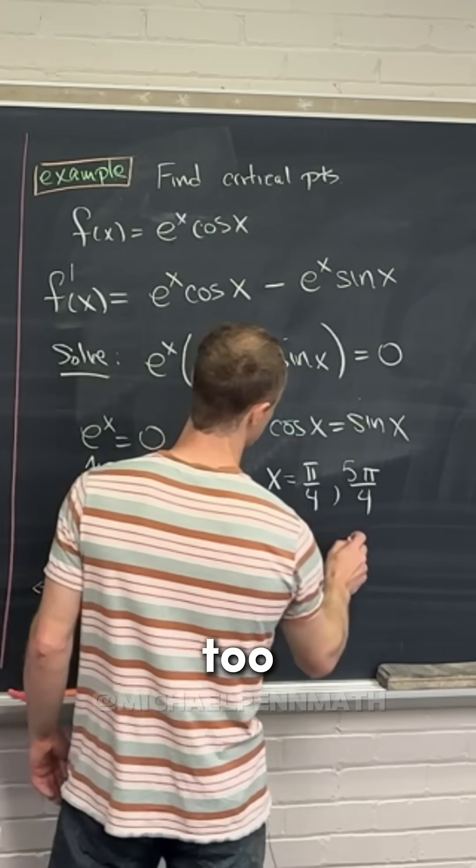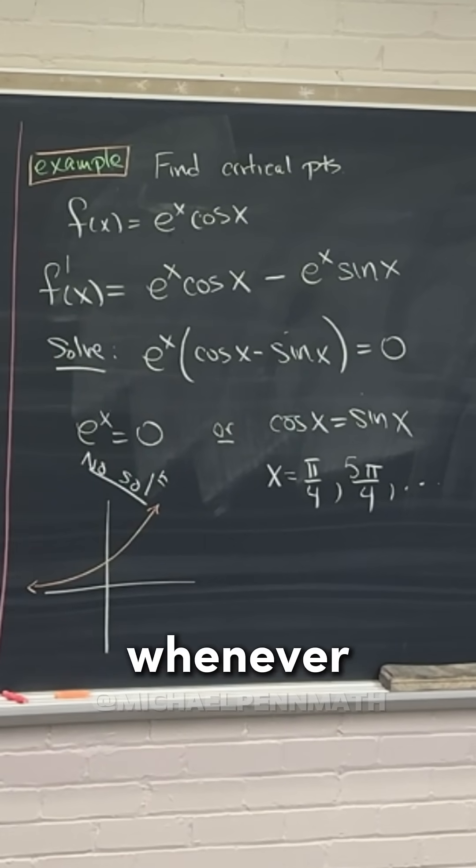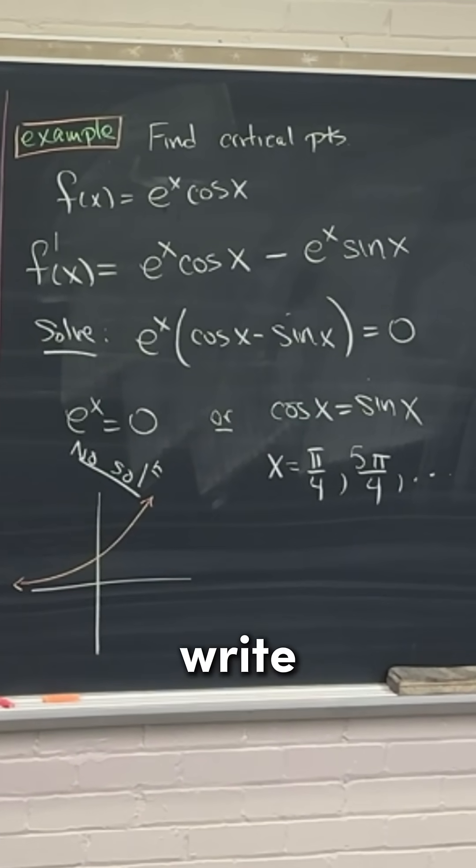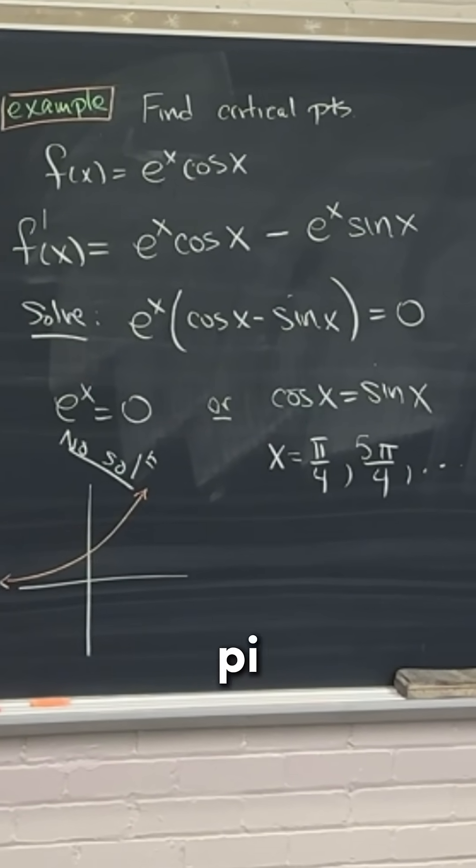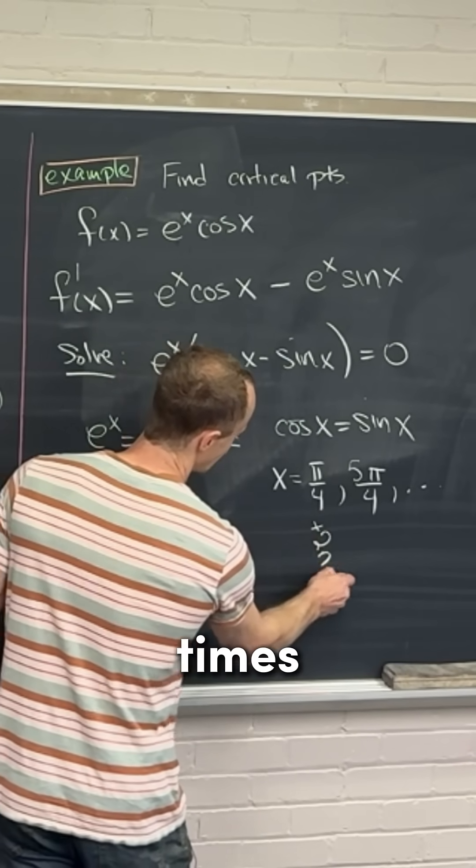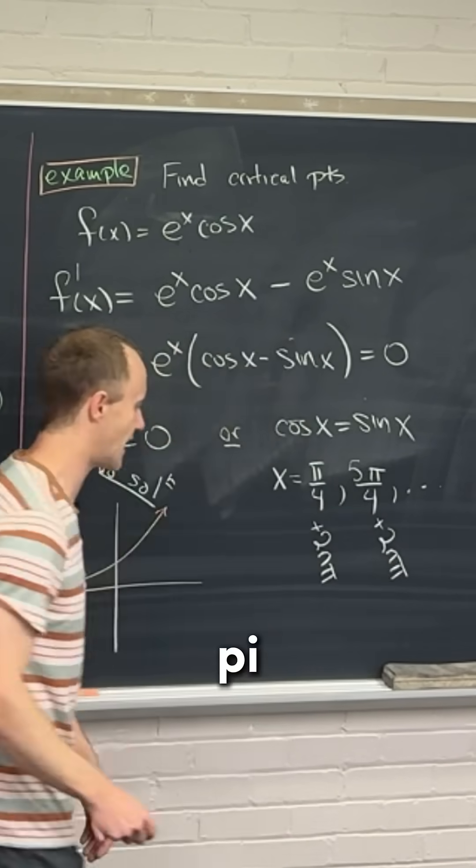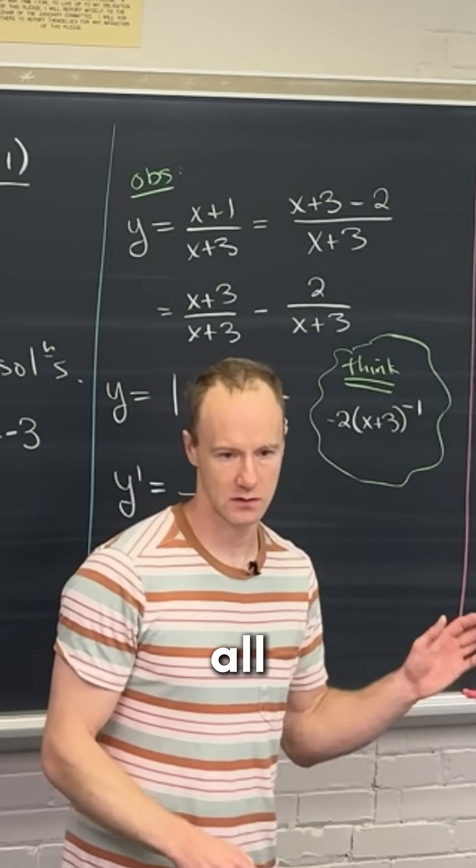And then there are going to be more here too. So we don't really need to worry about that. Generally, whenever you have a problem like this, you just write them between zero and two pi or something. But if you wanted to, you could just say, oh, this is plus two times n times pi. And then this is plus two times n times pi, as n runs over all integers.